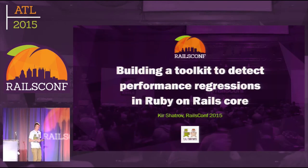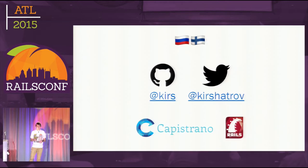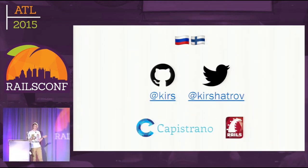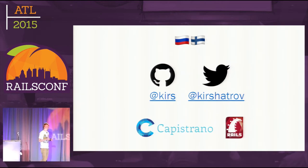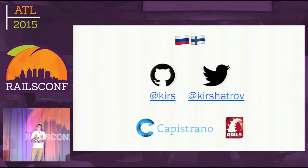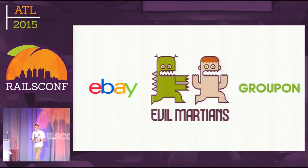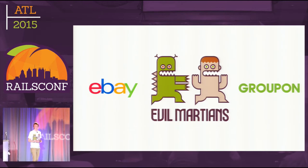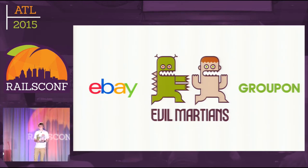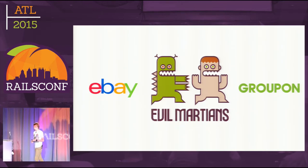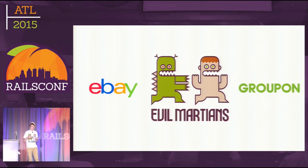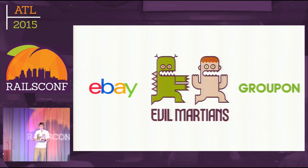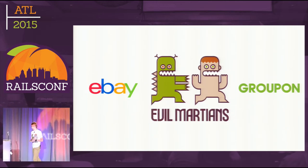Hello. My name is Kirsha Trov. I came from far Russia. I live in Finland now. I work on Capistrano as a maintainer, and I'm a Rails committer too. I work at this awesome Rails shop called Evil Martians. We do Rails development and consulting. We developed Groupon Russia since the early days. We are doing a lot of work for eBay, which is my current project.